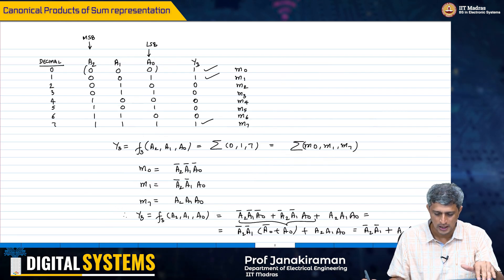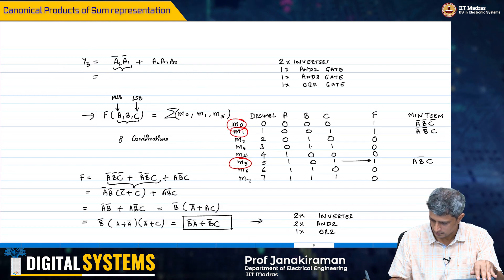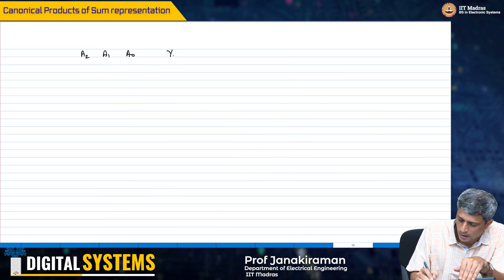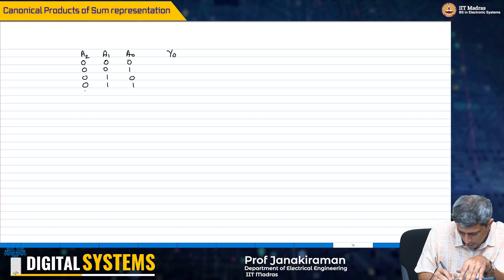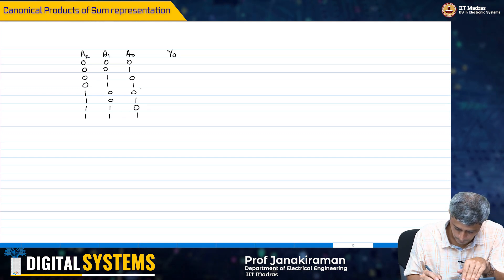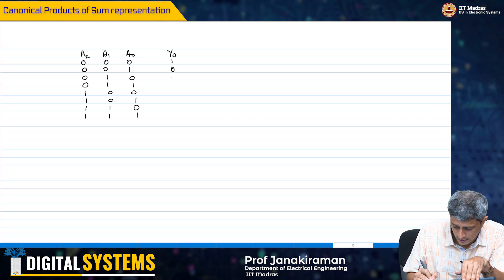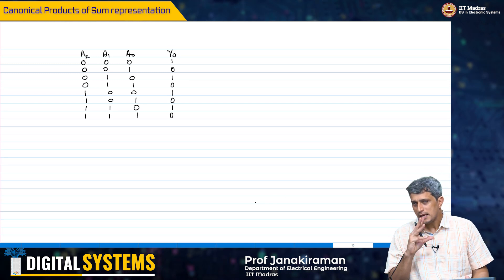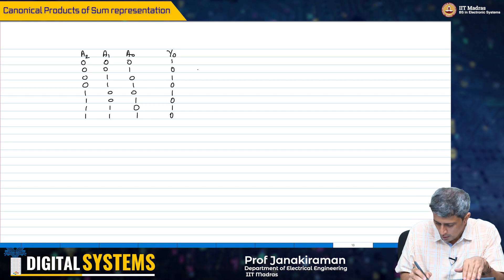Let me take the same example that I started with. I am going to look at a2, a1, a-naught, and y0. The values are 0, 0, 0, 0, 0, 1, 0, 1. And y0 was just the inversion of a0, so it was 1, 0, 1, 0, 1, 0. And of course, we looked at the minterms.